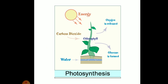In the photosynthesis diagram, you can see how plants get water from the roots, leaves get carbon dioxide from the air and energy from sunlight. Chlorophyll, which is green in color, gives green color to the leaves and is present in the leaves themselves. In this process, oxygen is released, which is very important for other living organisms.